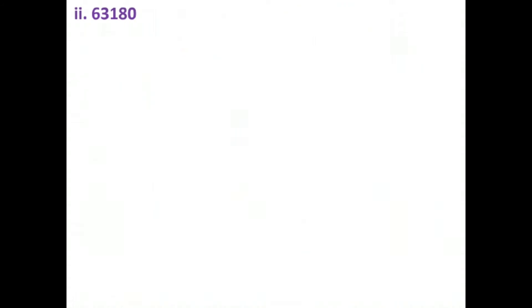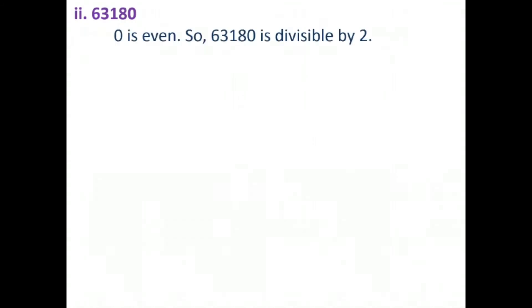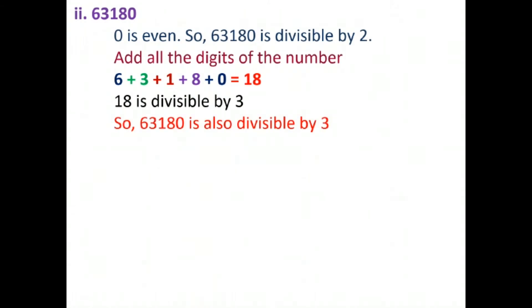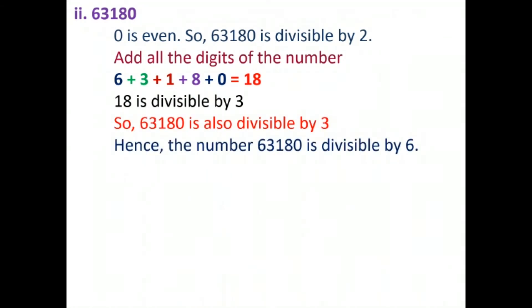The next question is question number 2: 263180. We check if this number is divisible by 2 and 3. The last digit is 0, which is even, so it is divisible by 2. Now adding all the digits: 6 plus 3 plus 1 plus 8 plus 0 equals 18. Since 18 is divisible by 3, this number is divisible by both 2 and 3, so 263180 is divisible by 6.